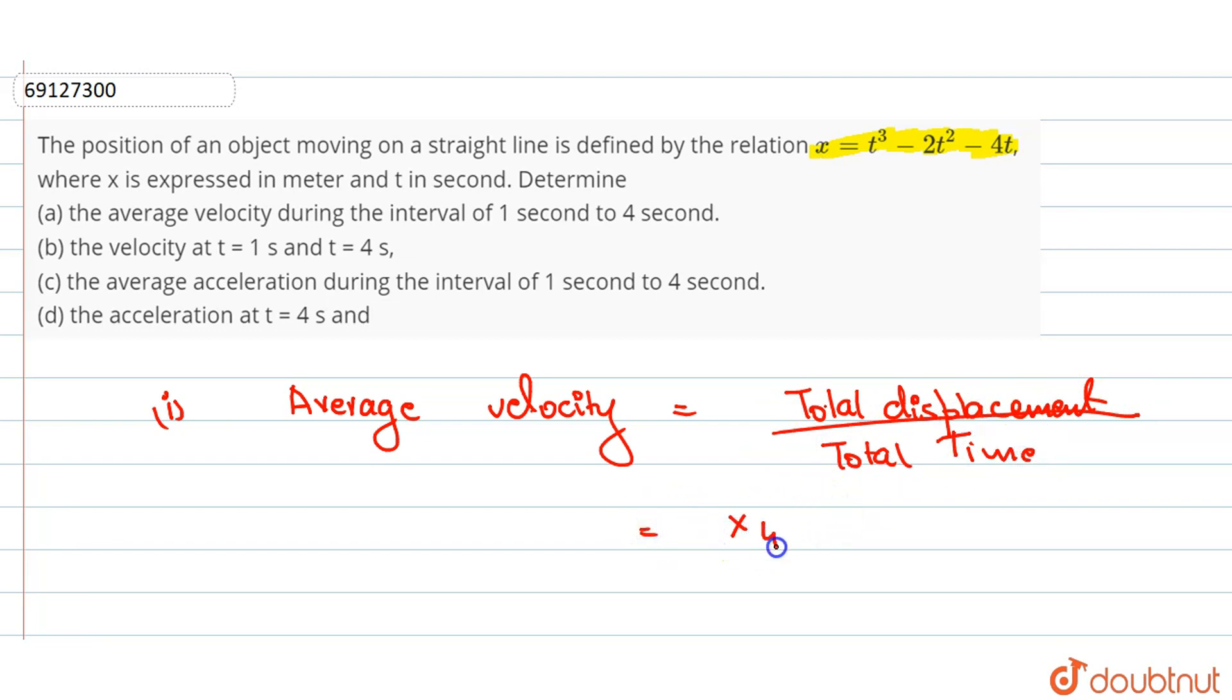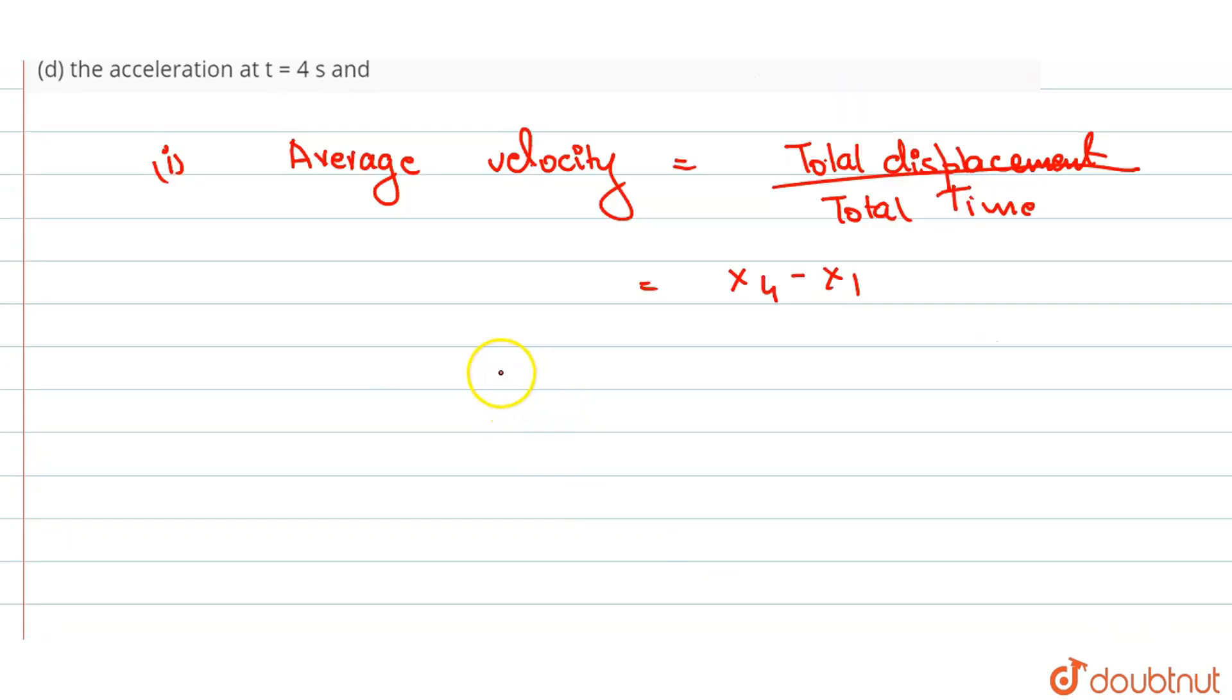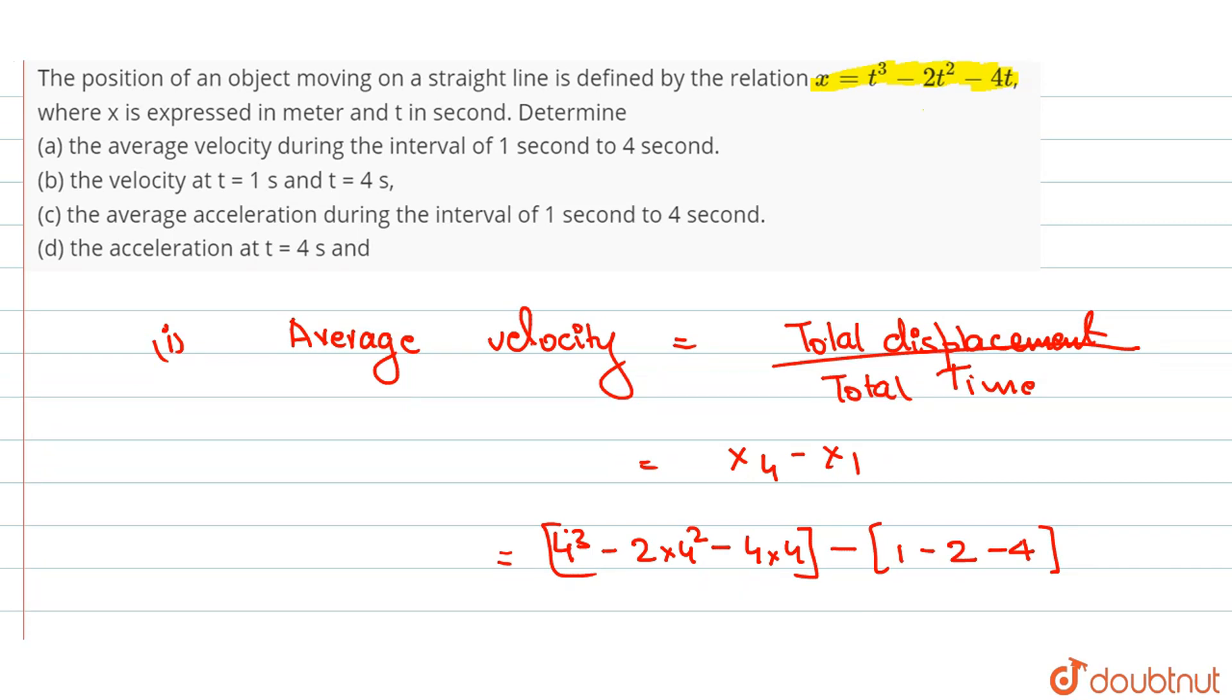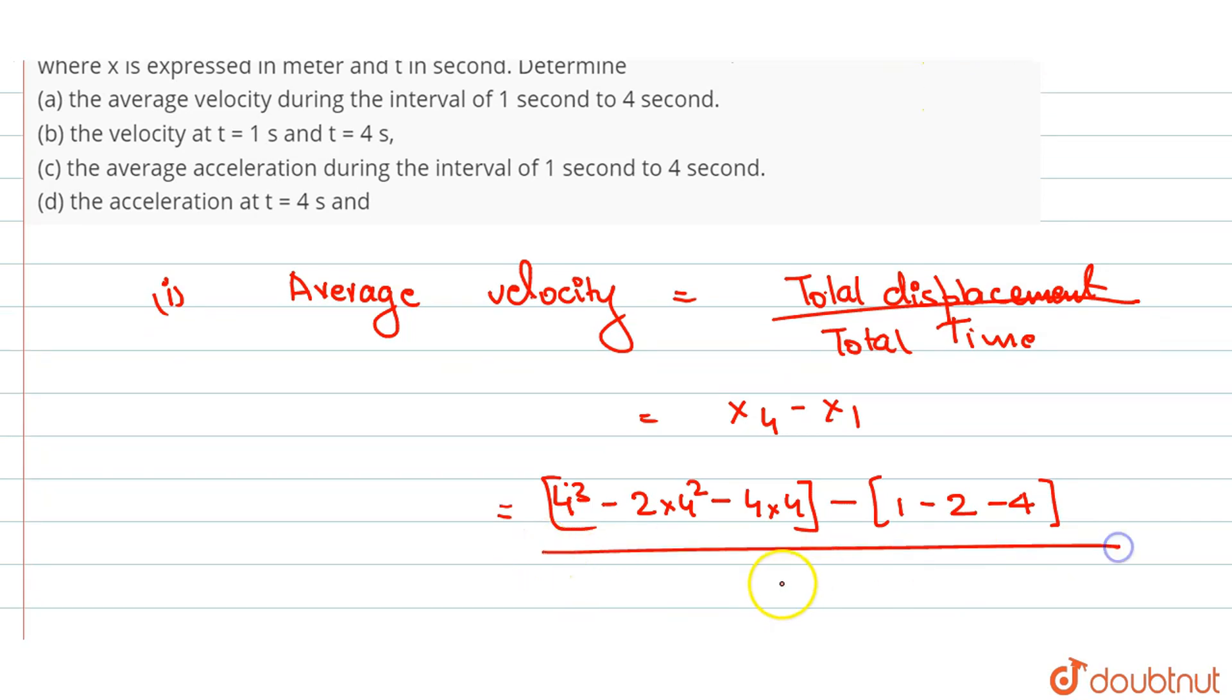This will be x at t equals 4 minus x at t equals 1. At t equals 4, x equals 4 cube minus 2 times 4 square minus 4 times 4. And at t equals 1, 1 minus 2 minus 4, all over 4 minus 1.